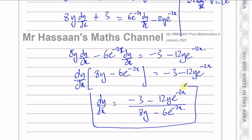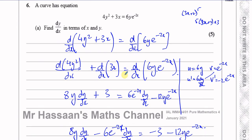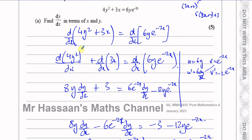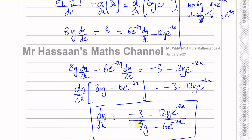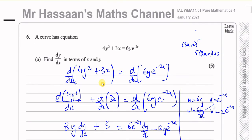I've differentiated y with respect to x using implicit differentiation. You can see dy/dx comes out in terms of both x and y — not just x. That's the answer to part A.